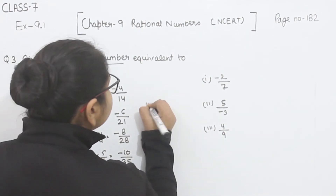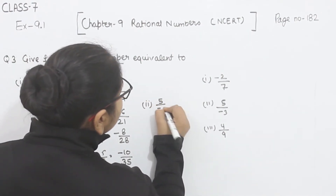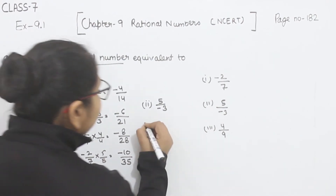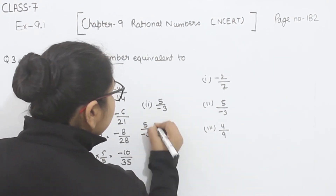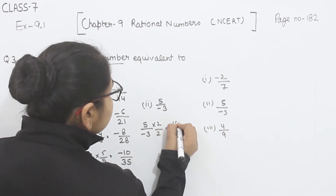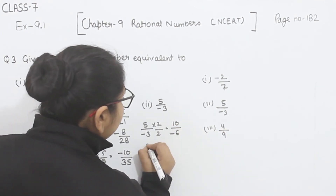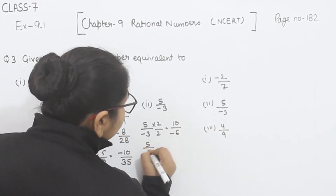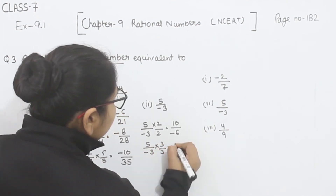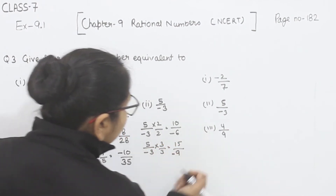Now comes part 2. In part 2, we are having 5 by minus 3. Same method — first I am going to multiply it by 2: 5 twos are 10 and 3 twos are 6, giving 10 by minus 6. Now multiplying by 3: 5 threes are 15 and 3 threes are 9, giving 15 by minus 9.